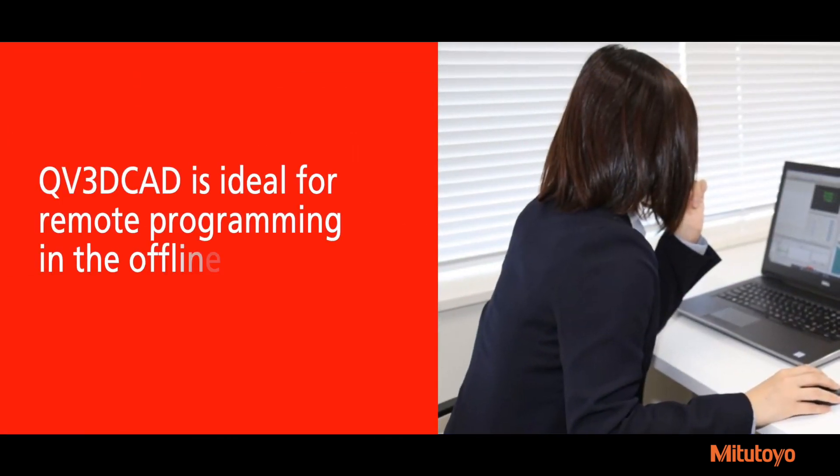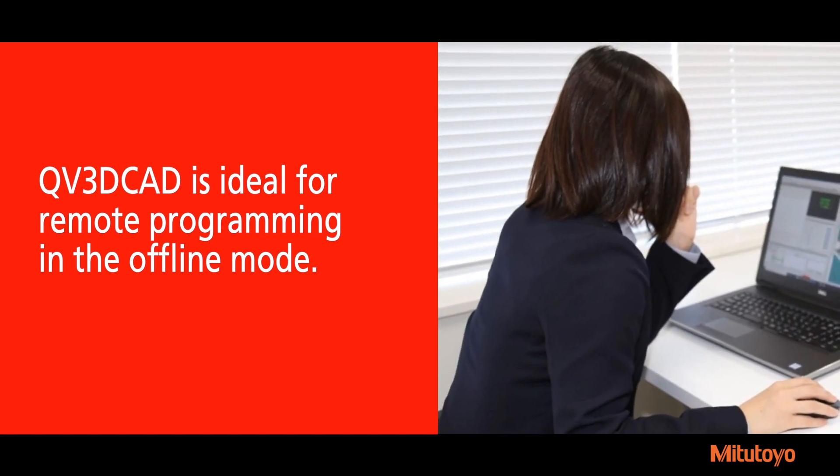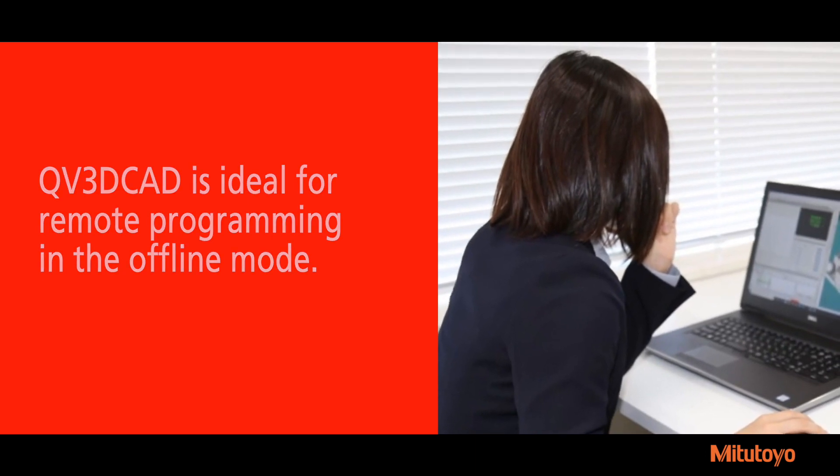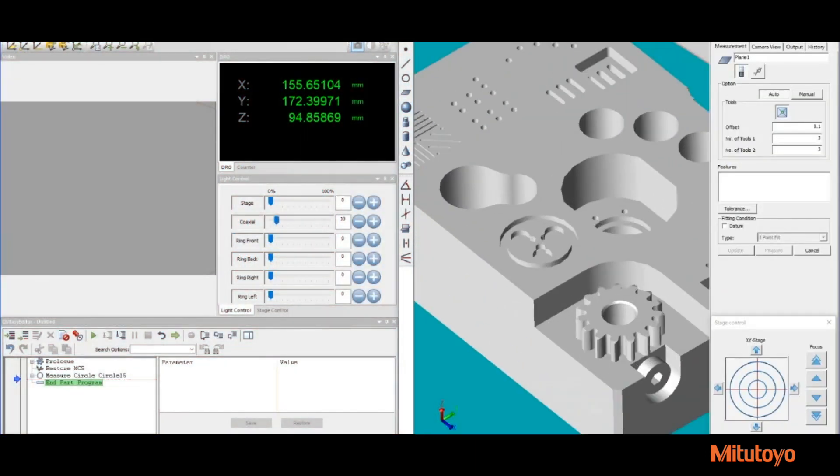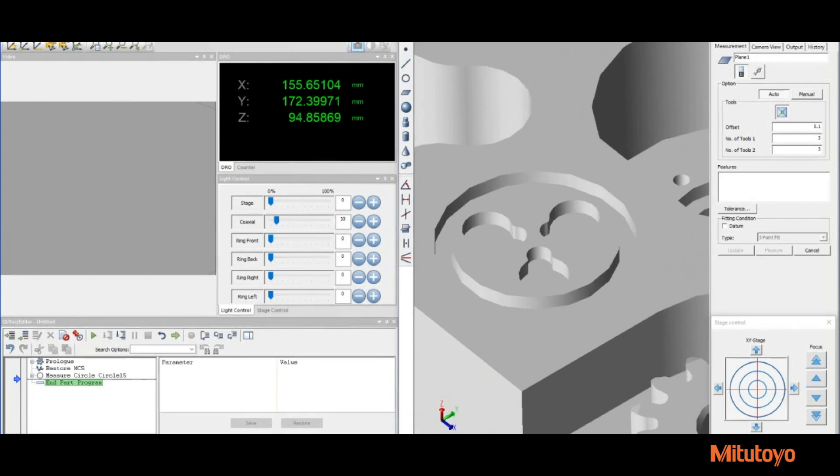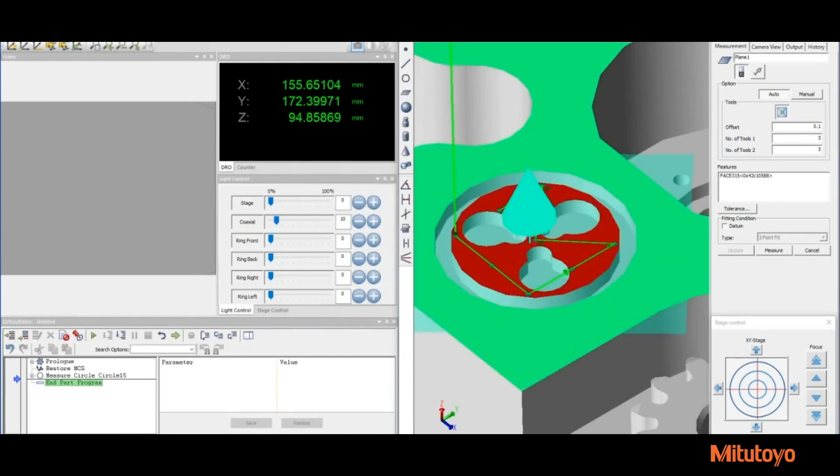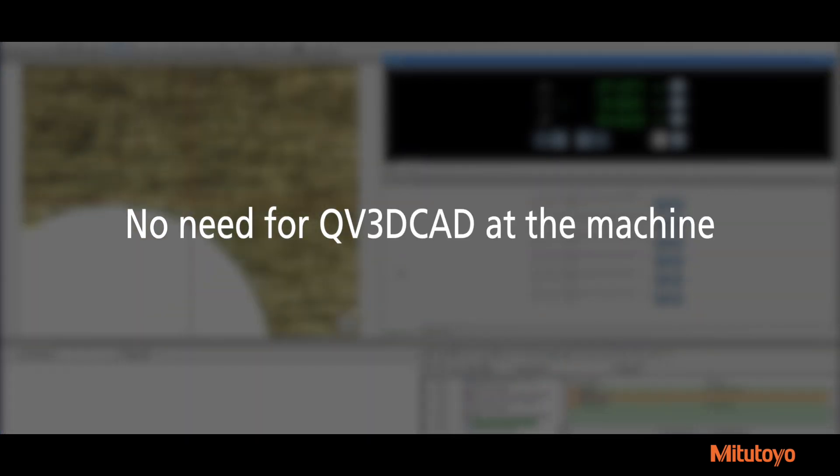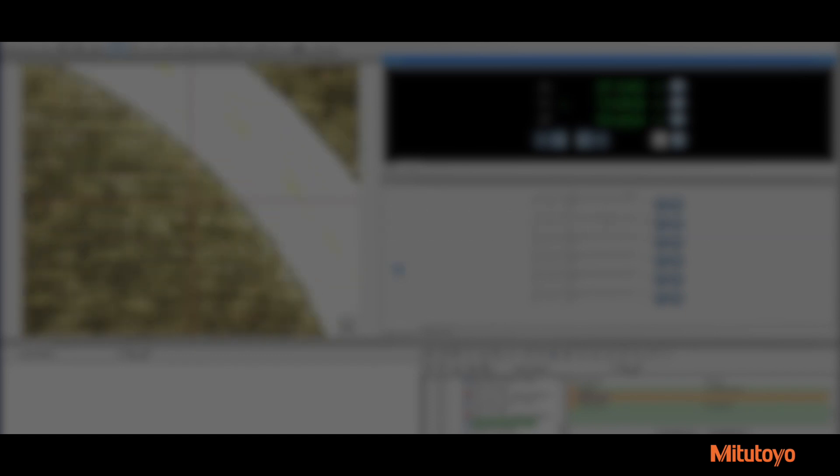While the online mode offers many updated features, QV3D CAD is ideal for remote programming in the offline mode. For offline work, QV3D CAD is installed on a separate computer, not connected to a Quick Vision machine, and the software generates a program from a solid 3D model. The program can be copied to a Quick Vision machine, and then be used for part inspection or further editing without the need for QV3D CAD at the machine.